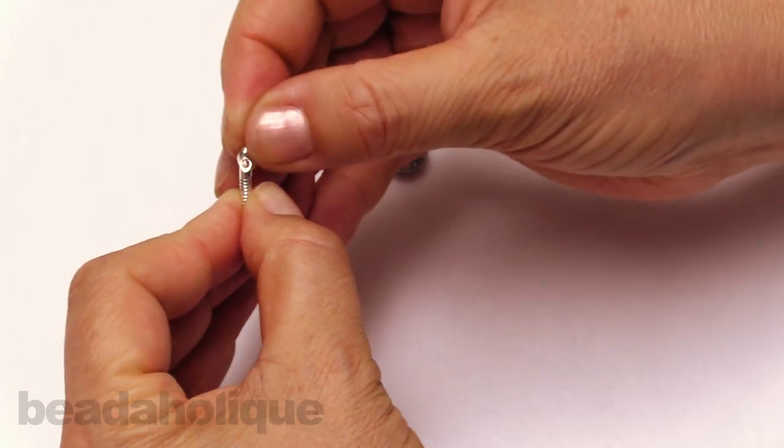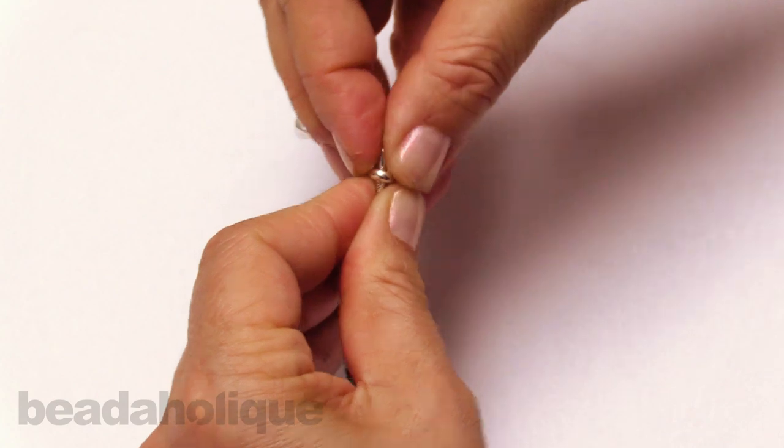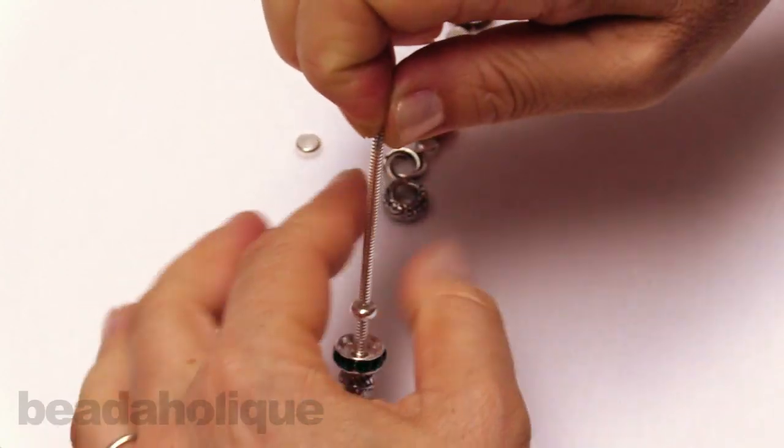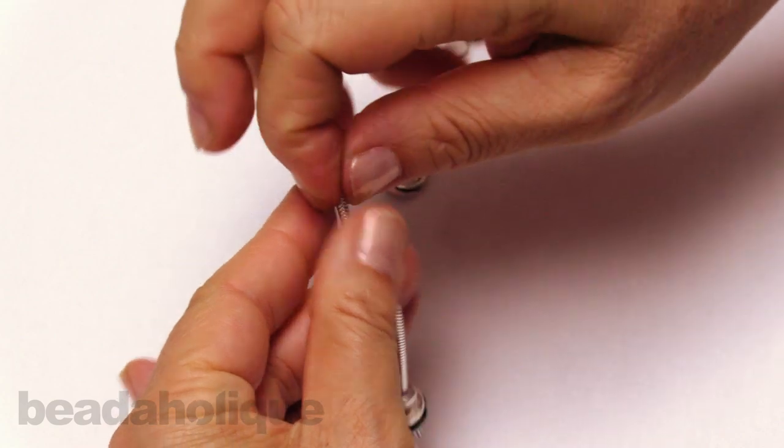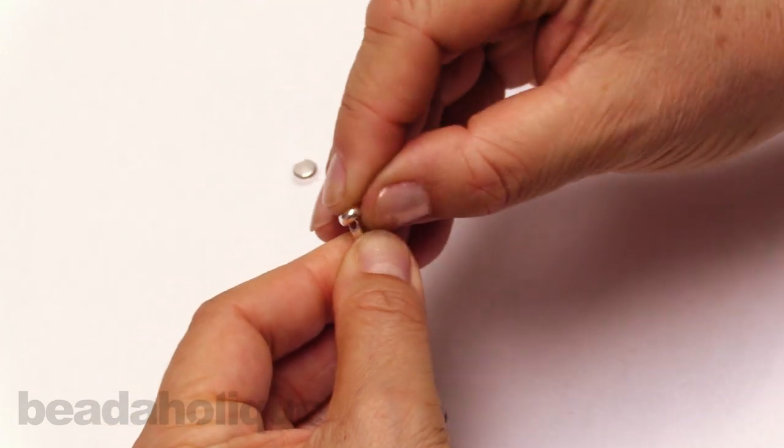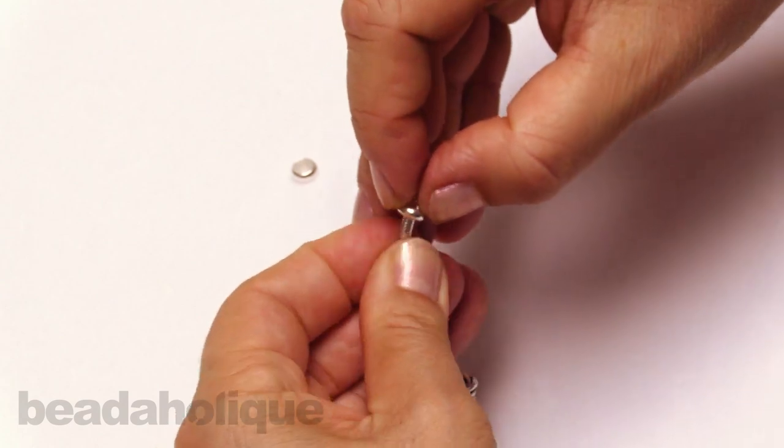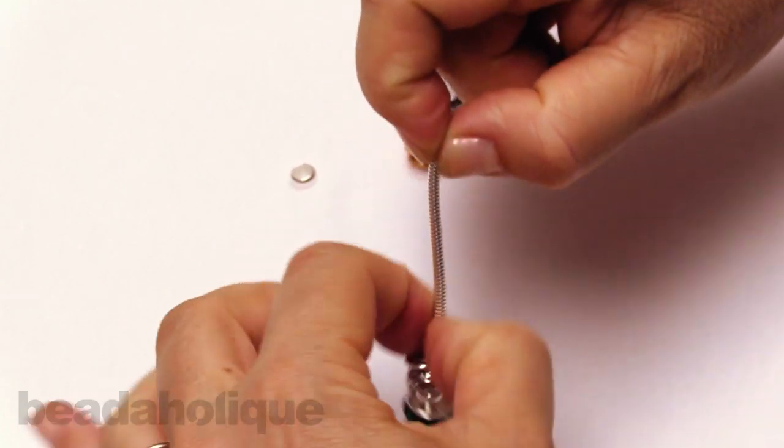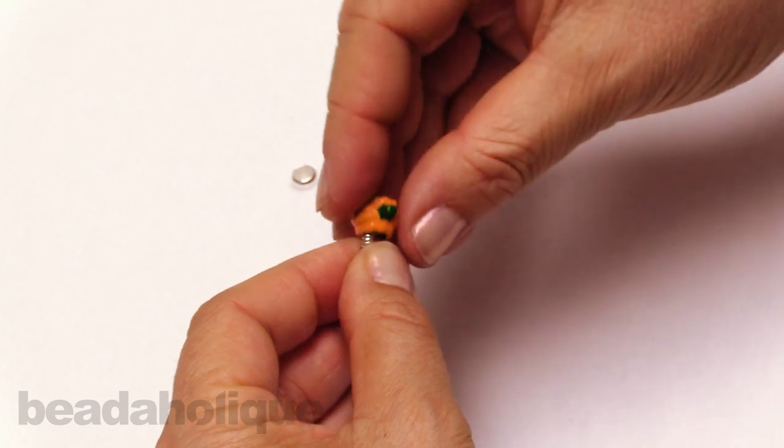So this is the pumpkin patch bracelet. And the bead stoppers also come in gold color. The chains themselves come in different lengths and styles.